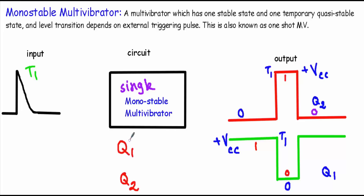The word mono means single, meaning the monostable multivibrator will have a single stable state. Depending upon the transistor across which we are taking the output: if I take the output across Q1, then plus VCC will be its stable state; if I take the output across Q2, then zero will be its stable state. In my circuit analysis I will take the output across Q2. Zero will be its stable state and it will remain at this level unless we apply a triggering pulse T1. When we apply this external triggering pulse, the output will go from zero to plus VCC, or from zero to logic one.